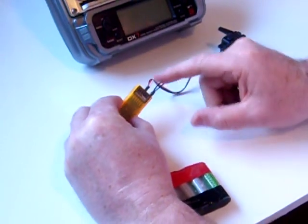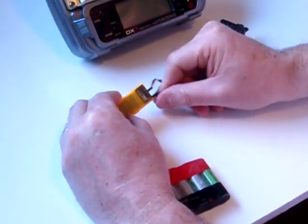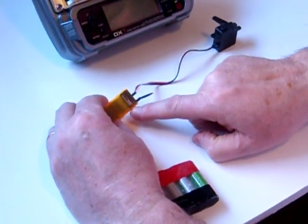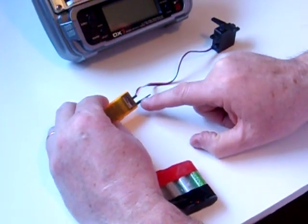It's the only socket on the receiver that this procedure will work in. It's no good trying to plug that into anything else. It must go in where the battery normally connects and it's marked battery and bind.